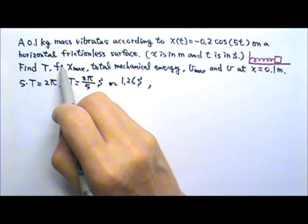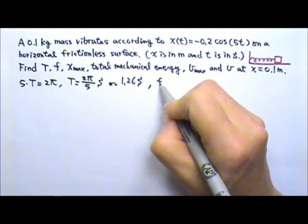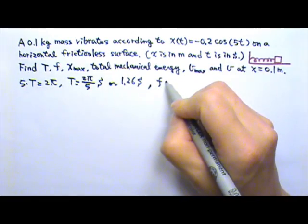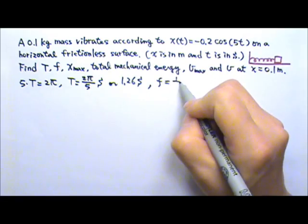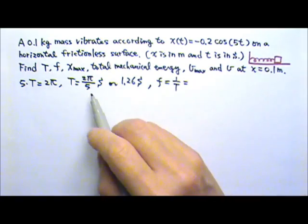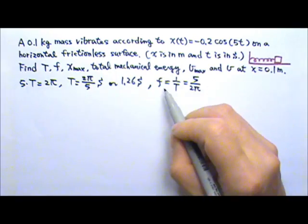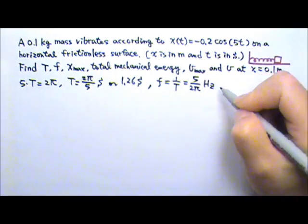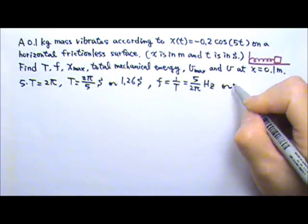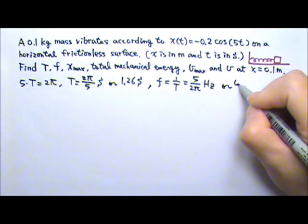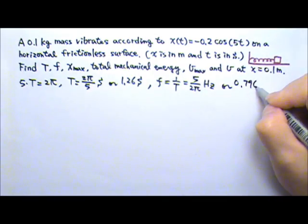And then we want to find the frequency. We already have the period, so we can just use frequency is 1 over period. So that will be 5 divided by 2 pi, and the frequency is in hertz. Or you can do this calculation and you'll find it is 0.796 hertz.